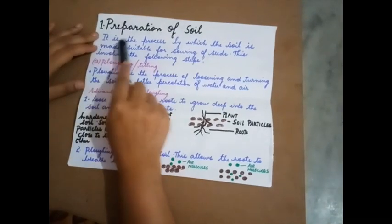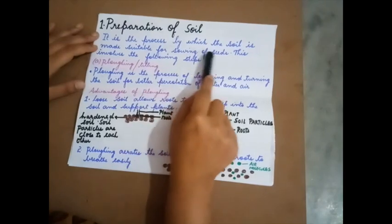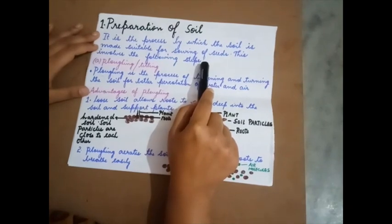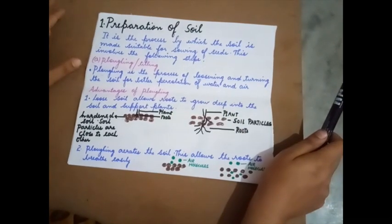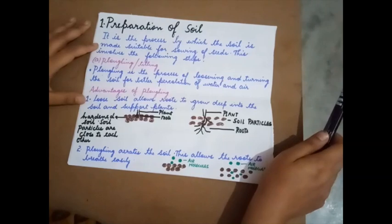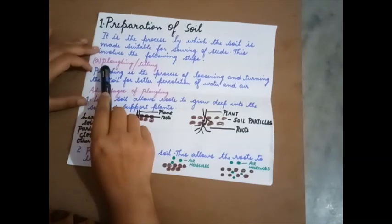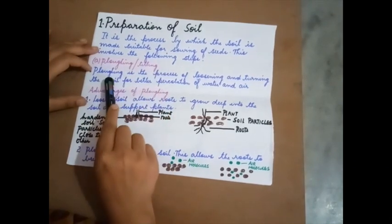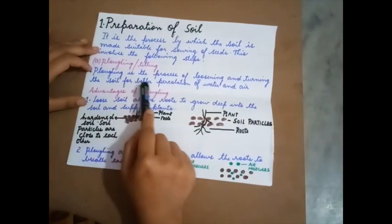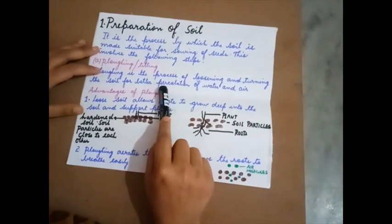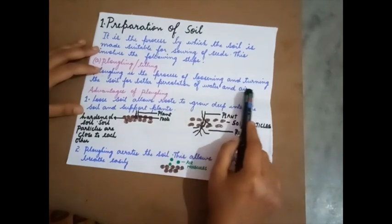Preparation of soil is a process by which the soil is made suitable for sowing of seeds. When a seed germinates, roots are produced and they need proper penetration into the soil to absorb water and minerals and finally give us a good yield. One key step is plowing or tilling — the process of loosening and turning the soil for better percolation, meaning better movement, of water and air.